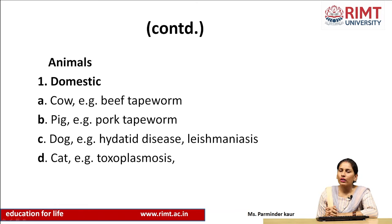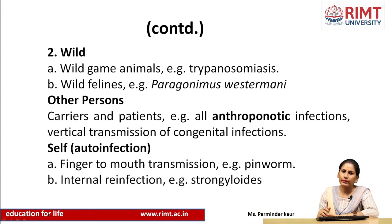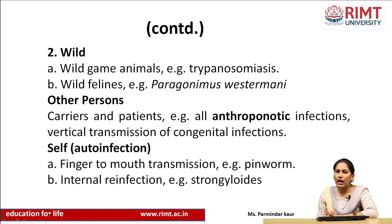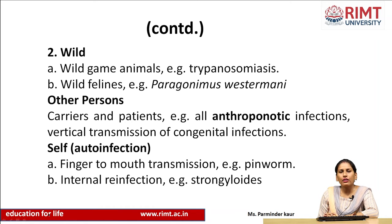Animals are also sources of infection: cow — beef tapeworm; pig — pork tapeworm; dog — hydatid disease and leishmaniasis; cat — toxoplasmosis. Wild animals such as wild cats and larger cats can also be sources, for example Paragonimus westermani. Other sources include carriers and patients through anthroponotic infections or vertical transmission of congenital infections — meaning person-to-person or human-to-human infection. Self-infection or auto-infection can also occur through finger-to-mouth transmission, example pinworm; and internal reinfection, example Strongyloides.